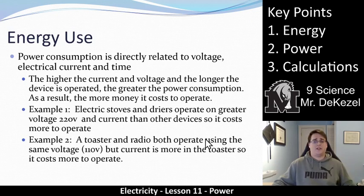A toaster and a radio both operate using the same voltage, 110 volts, but the current is more in the toaster, so it costs more to operate. An increased current would increase the power.